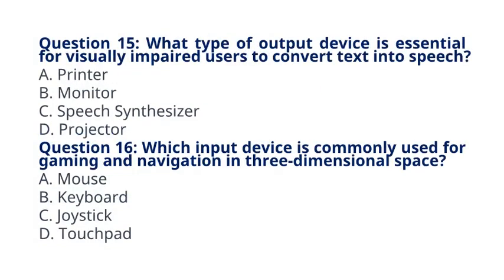Question 15: What type of output device is essential for visually impaired users to convert text into speech? A. Printer. B. Monitor. C. Speech synthesizer. D. Projector. The correct answer to question 15 is option C: Speech synthesizer. Speech synthesizers convert text into audible speech, assisting visually impaired users.